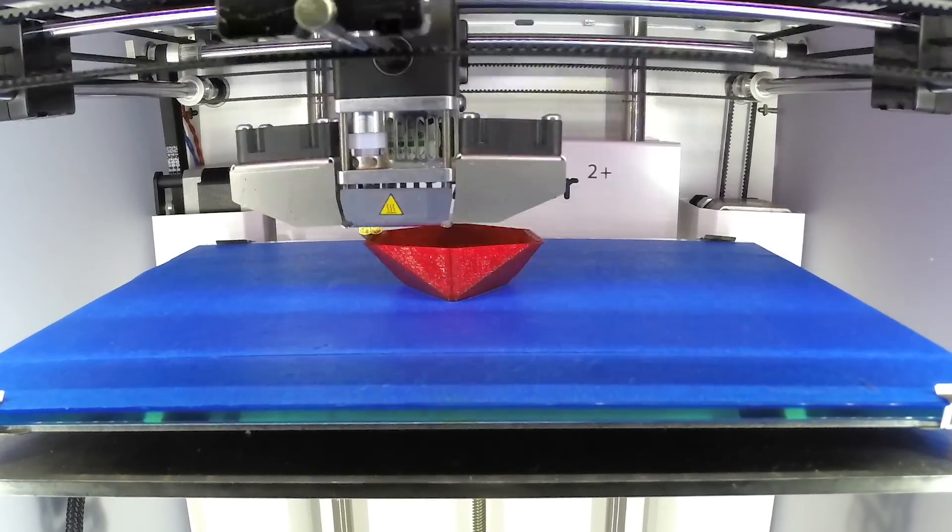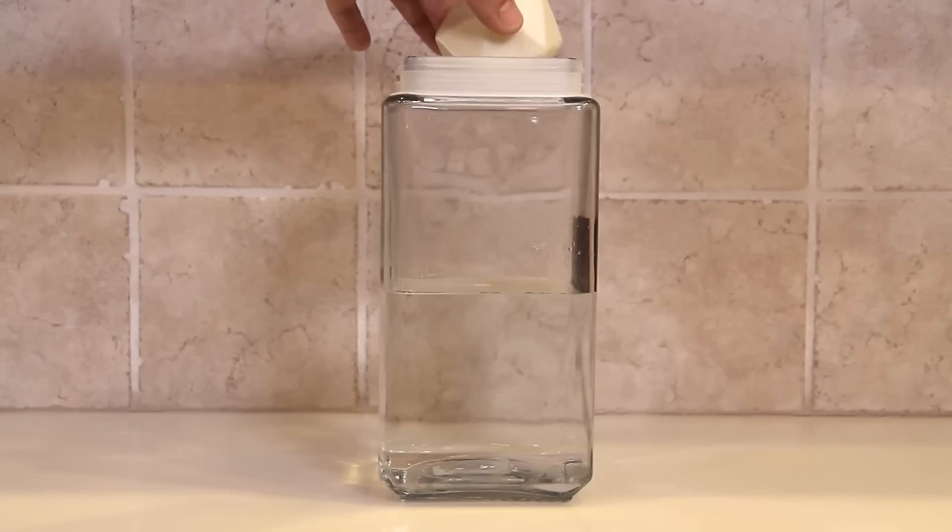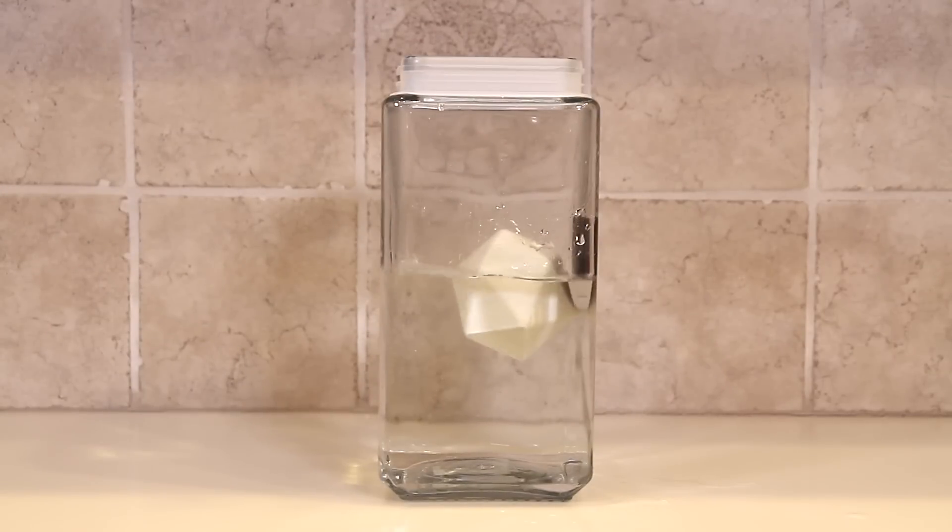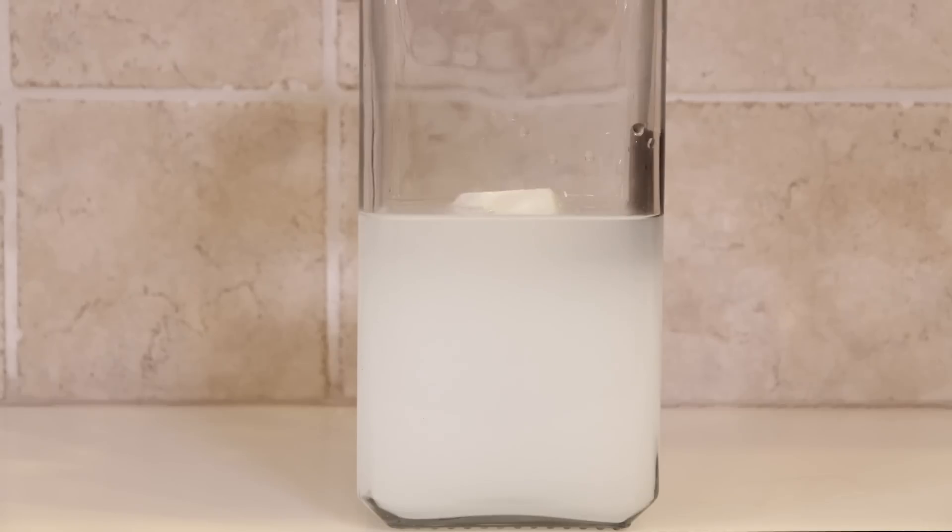The two parts don't need any support material and each takes about 30 minutes to 3D print. You could also try using water-soluble filament which lets you print more details and you won't have to demold because it dissolves in water.